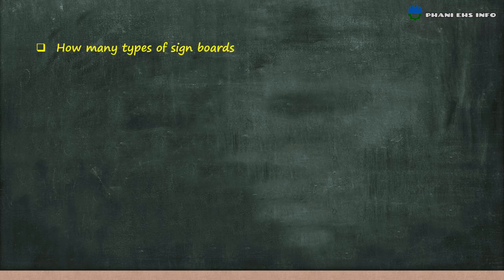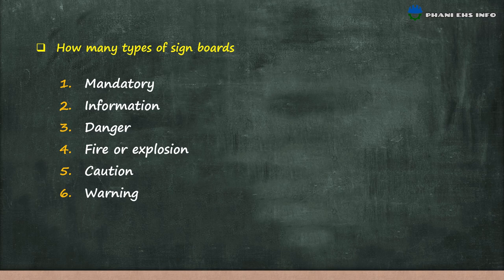What is the colour coding system and how many types of sign boards are there? There are 6 main types of sign boards: mandatory, information, danger, fire or explosion, caution, and warning sign boards.